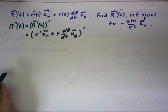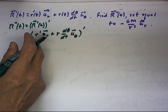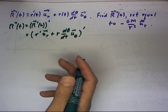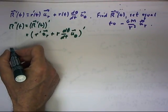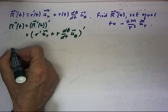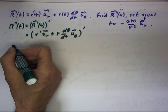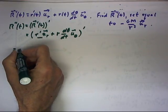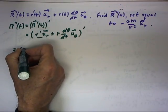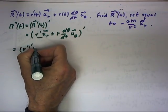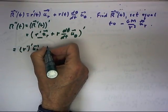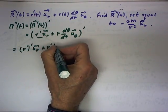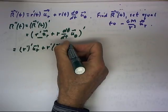Now this is a fairly straightforward expression. We're just going to apply the product rule and the chain rule. And we see that this is going to equal the derivative of this term. Let's just do the derivative of this term. That's going to be r prime prime times ur plus r prime times u sub r prime.